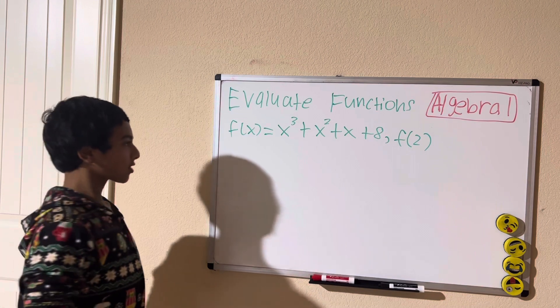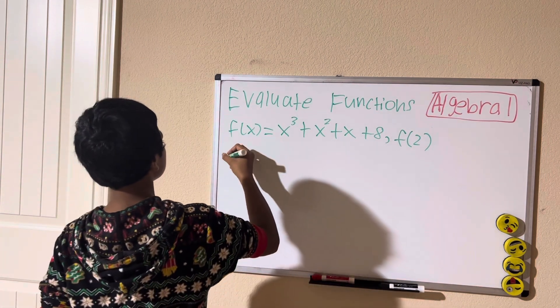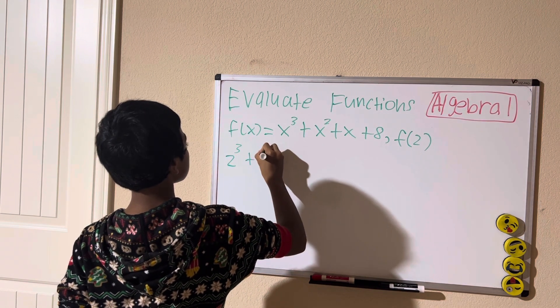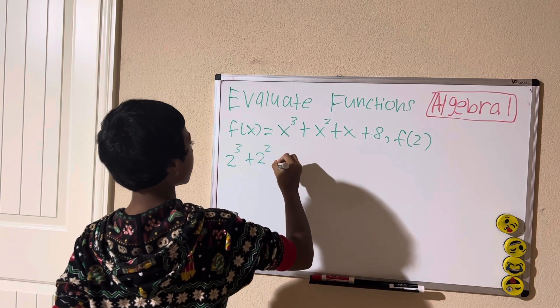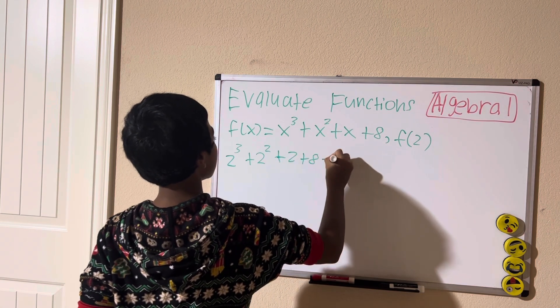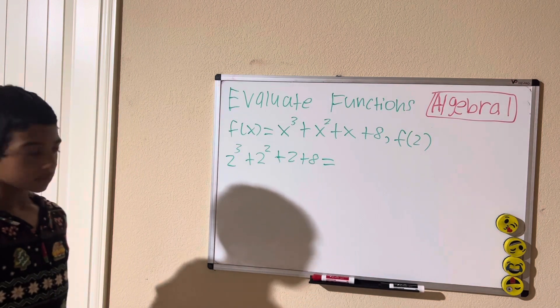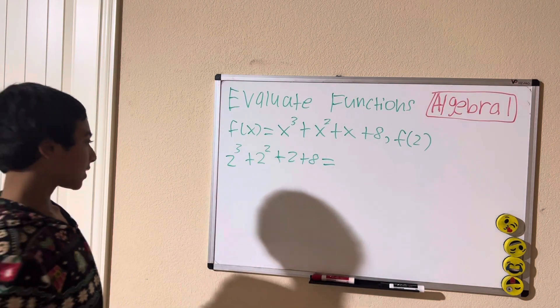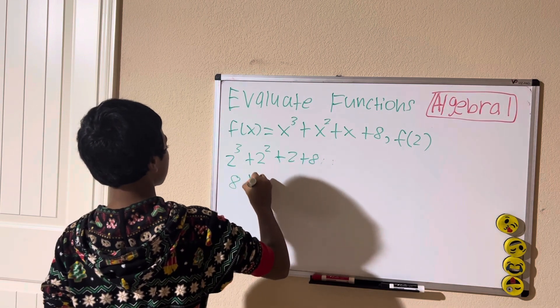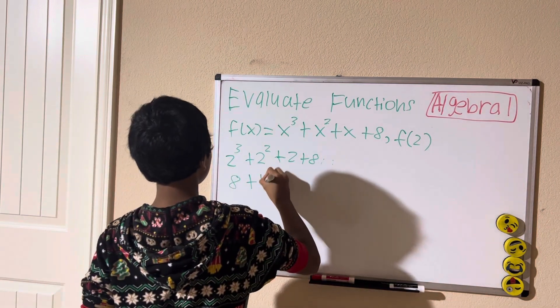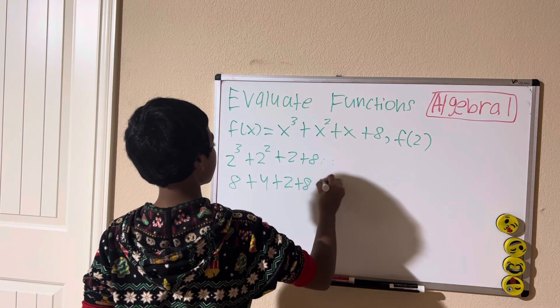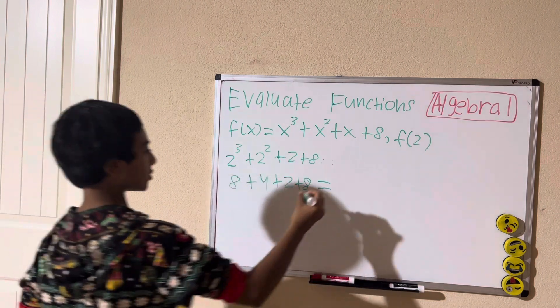Let's start. We're going to have 2 cubed plus 2 squared plus 2 plus 8. 2 cubed is 8 plus 2 squared is 4 plus 2 plus 8. All of that added is equal to 22.